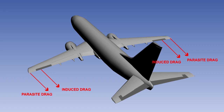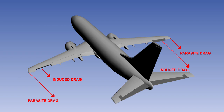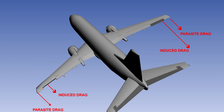With differential ailerons, the aileron linkage causes the up-going aileron to move through a larger angle of deflection than the down-going aileron. This increases the parasite drag on the up-going aileron and reduces it on the down-going aileron, thus reducing the difference in total drag between the two wings.